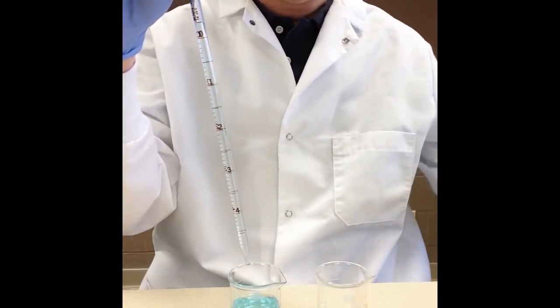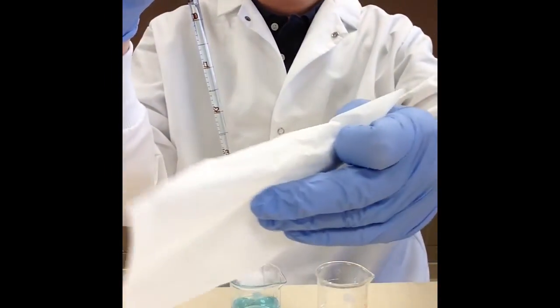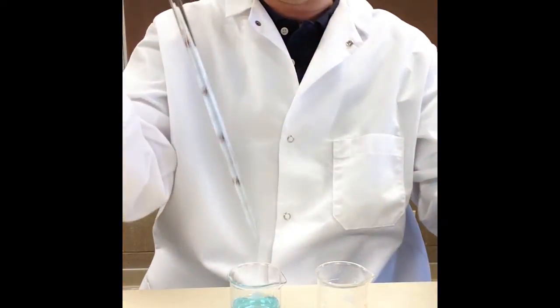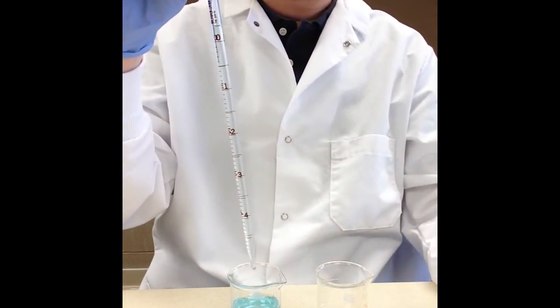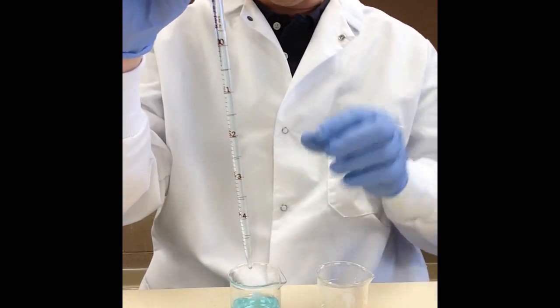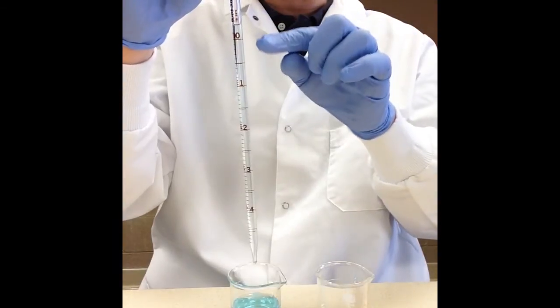So I've gone ahead and I've taken it out. Now what I need to do is I'm going to take a kim wipe and in a downward motion I'm going to wipe off the excess liquid around the outside of the pipette.